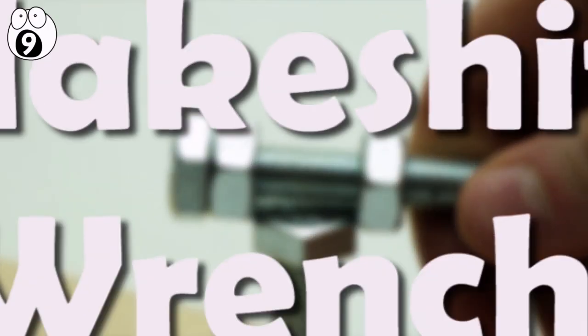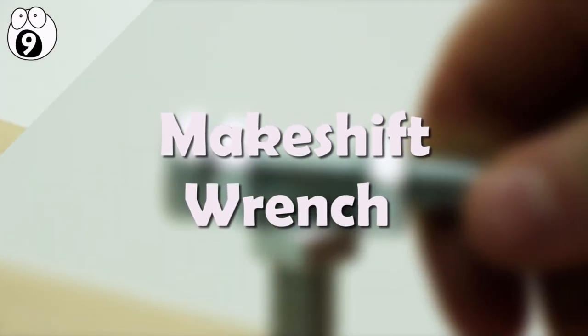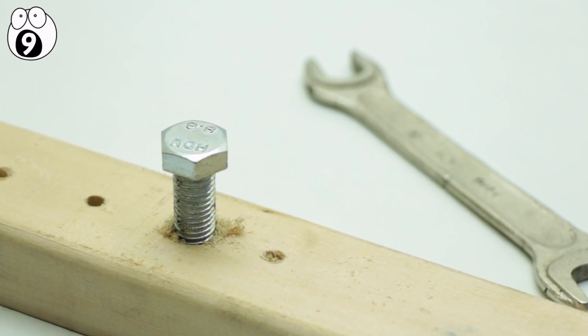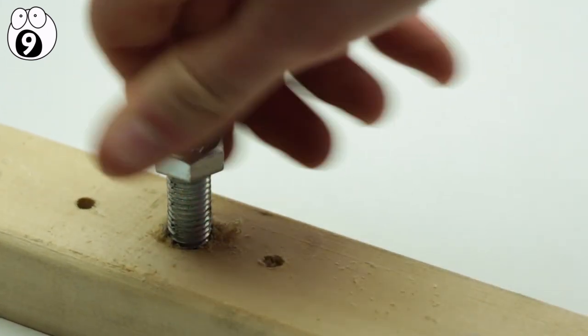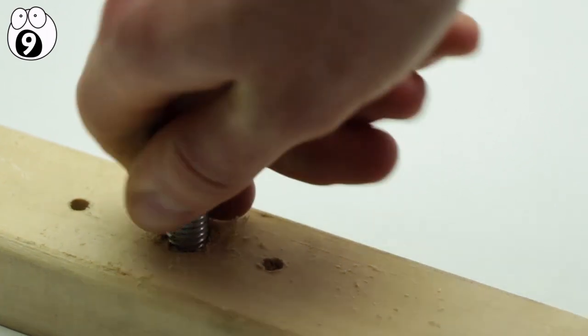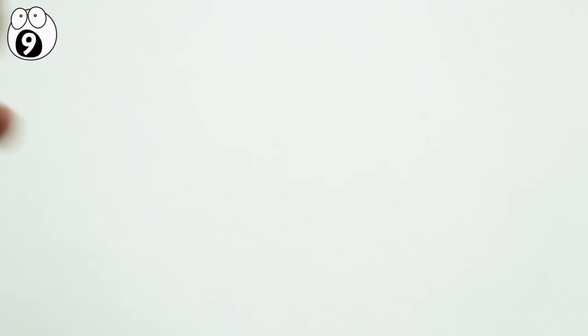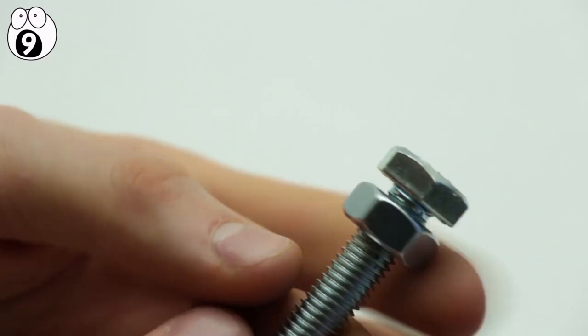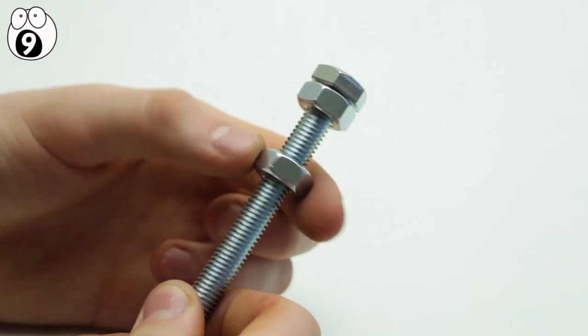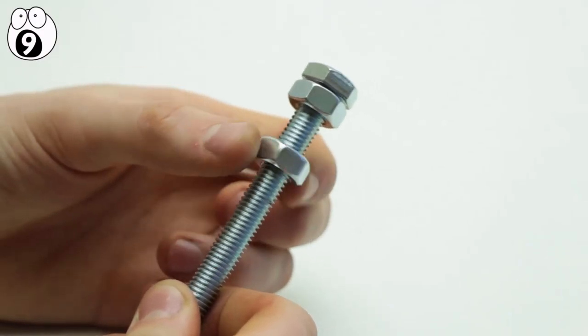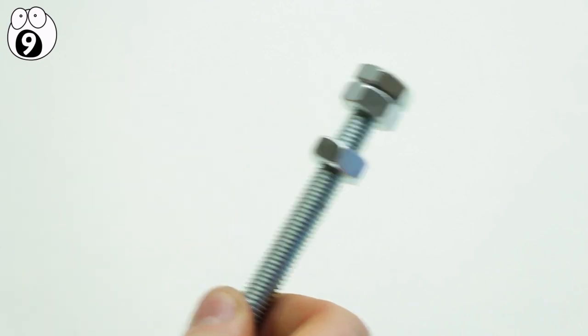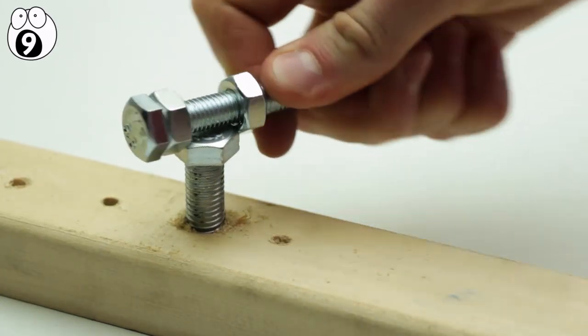Number 9: Makeshift Wrench. From time to time, we all lose the right tool for the job, so here's a way to make sure that you can still carry on even if you happen to misplace your wrench. Simply take a normal bolt and thread a nut up to the top. Then thread another nut until it has closed enough to grip whatever you're trying to loosen. Now it should provide you enough leverage to get the job done.